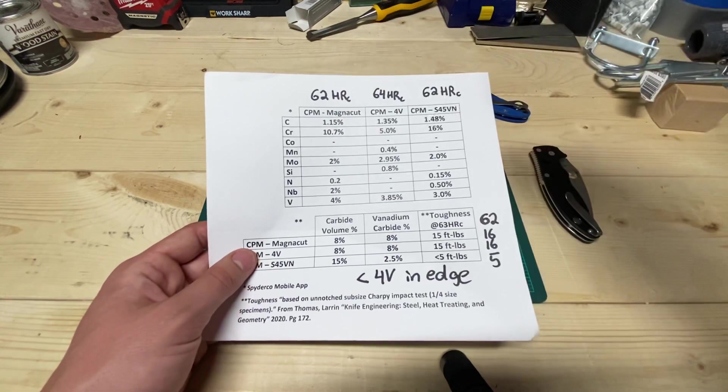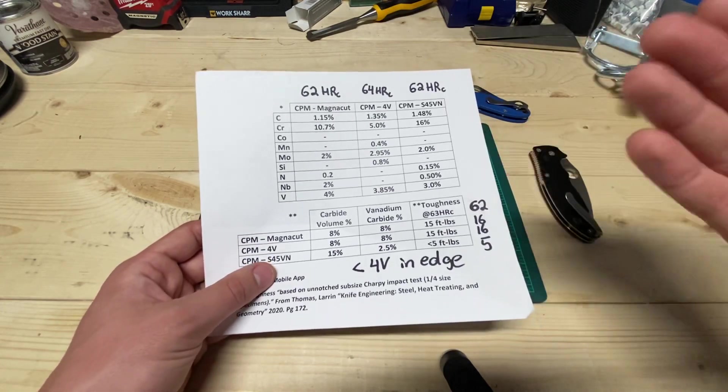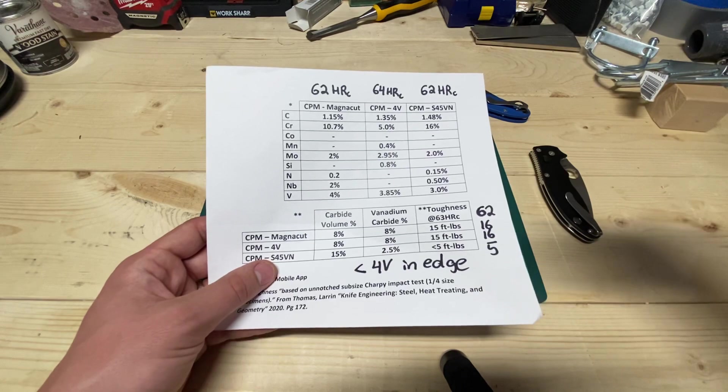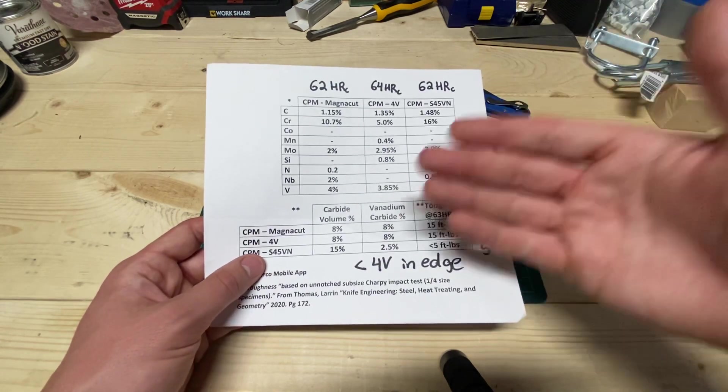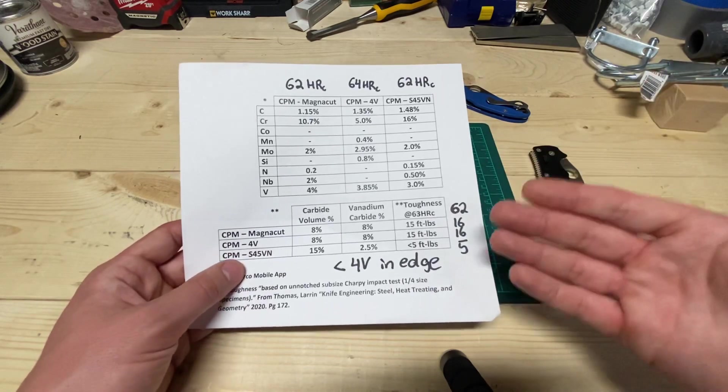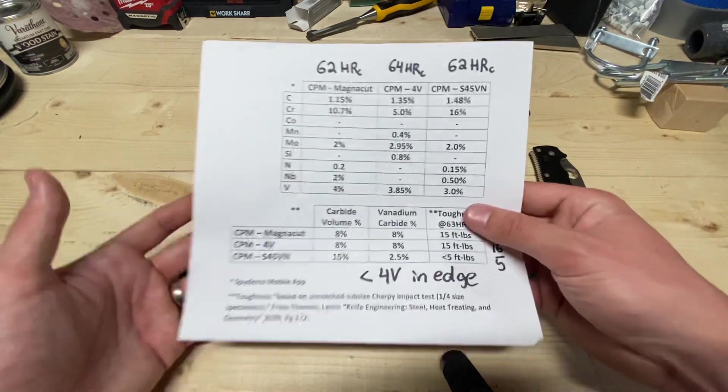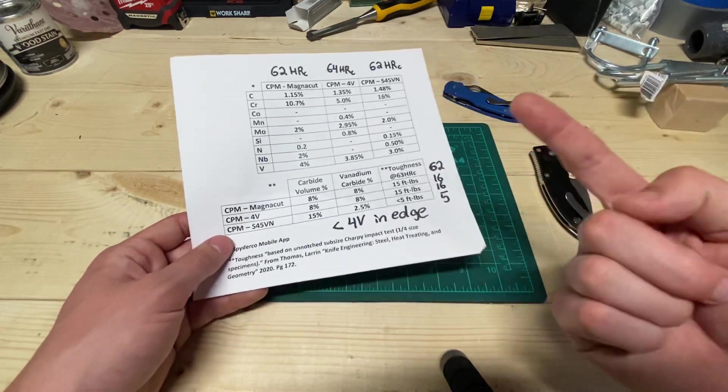You get the hardness that's going to make it have so much better edge stability and it's going to be easier to sharpen. You've got the efficient carbides. It's so stainless. It's the whole package, guys. It has no compromises, but one technically.